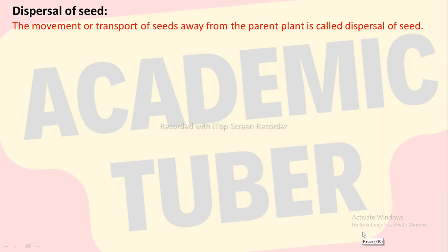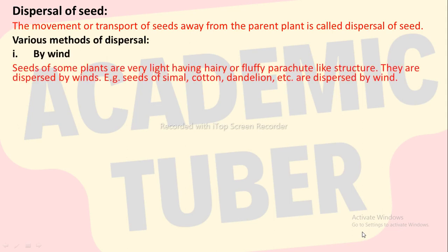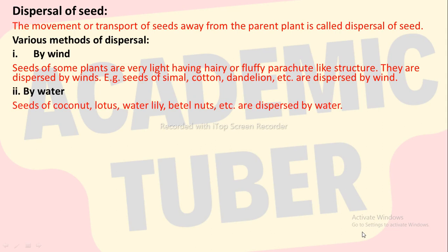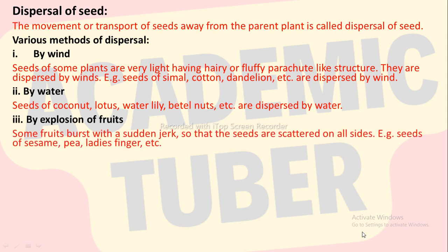Dispersal of seed. The movement or transport of seeds away from the parent plant is called dispersal of seed. There are various methods. First, by wind: seeds of some plants are very light, having hairy or fluffy parachute-like structures; they are dispersed by wind, for example seeds of simul, cotton, dandelions, etc. Second, by water: seeds of coconut, lotus, water lily, etc. are dispersed by water. Third, by explosion of fruits: some fruits burst with a sudden jerk so that seeds are scattered on all sides, for example seeds of sesame, pea, lady's finger, etc.